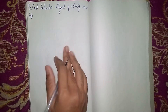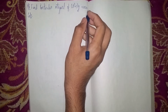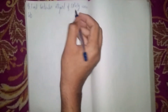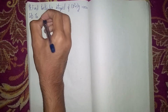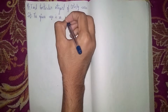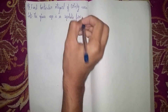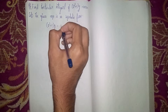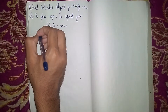Hello and welcome back to my channel. This question is: find the particular integral of (D² + 1)y = cos(2x). This is a non-homogeneous differential equation. First, I will find the particular integral. The given equation is written in symbolic form: D² + 1 into y is equal to cos(2x).